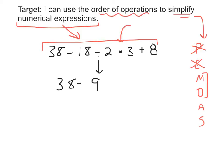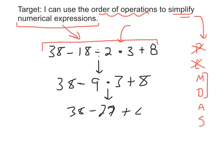38 minus 9 times 3 plus 8. So I'm not done with multiply and divide, because I still have multiply. So my next step is going to be this multiplication — from left to right, it's the first multiplication. 9 times 3 is 27. So I'm left with 38 minus 27 plus 8. So I'm done with all my multiplications and divisions.